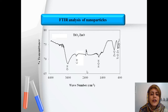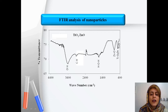Also, FTIR analysis is used to determine the structure and the respective bonds between nanoparticles. As you can see, the observed peaks at 480, 550, and 590 are related to TiO, TiO₂-Zn, and ZnO bonds respectively. Also, the observed peaks at 1,600 and 3,400 are related to H-O-H and O-H bonds respectively.